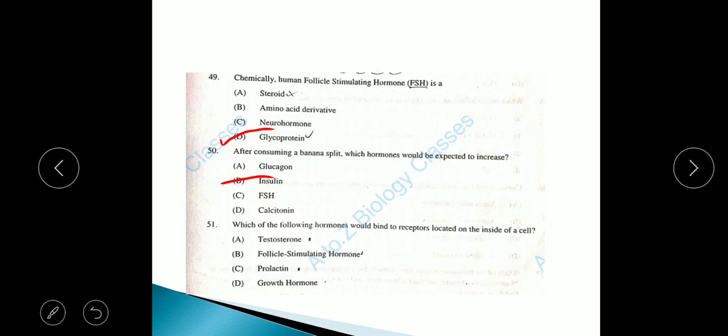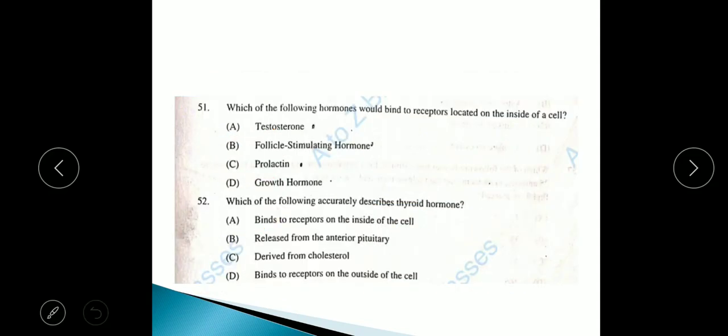Question 51: Which of the following hormones would bind to receptor located on the inside of a cell? That is testosterone, option A. Question 52: Which of the following accurately describes thyroid hormone? The answer is option A, binds to receptor on the inside of the cell.